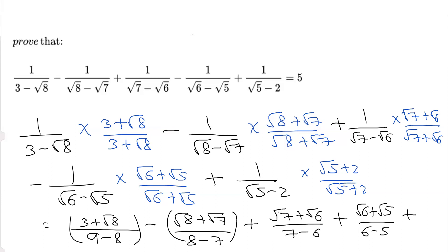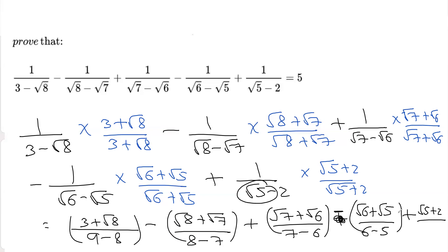We have the minus sign here. For the last part, the numerator is root 5 plus 2, and the denominator is root 5 squared minus 2 squared, which is 5 minus 4, equaling 1.